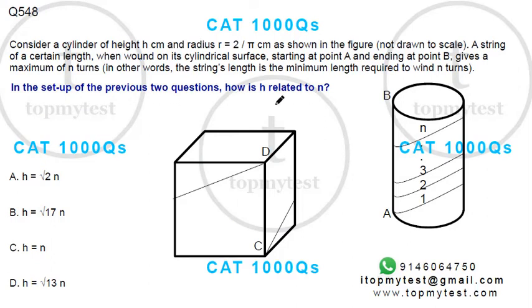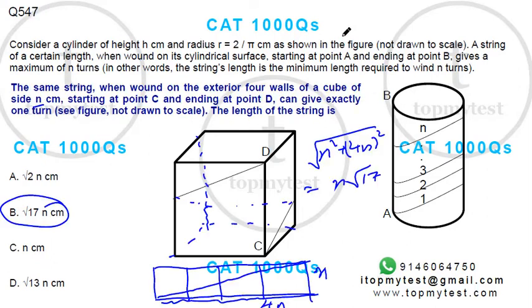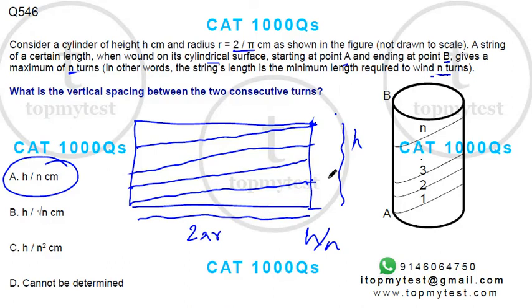And the last one says in the setup of the two previous questions, how is h related to n? Now I know the length of the string is n√17, and using this I can find out the length of the string.